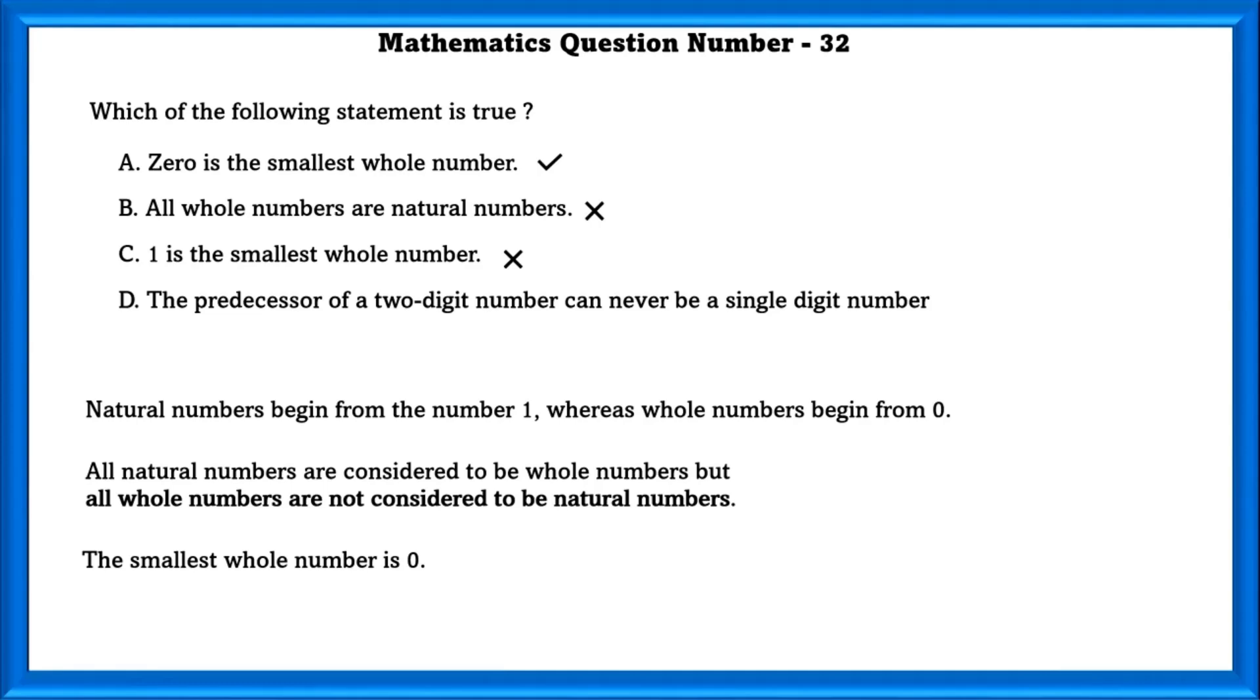The predecessor of a 2 digit number can never be a single digit number. Wrong. Predecessor of 10 is equal to 9.